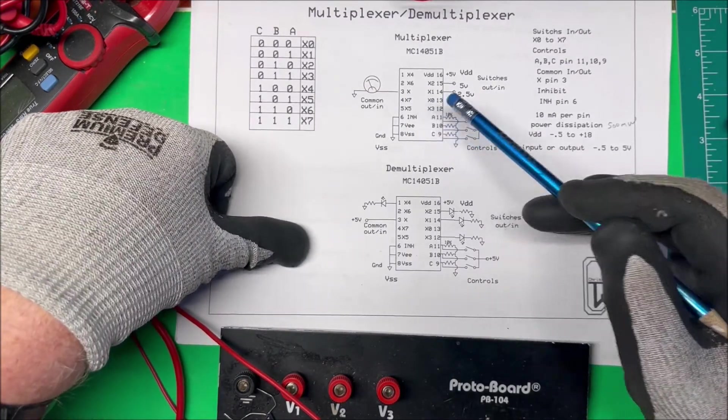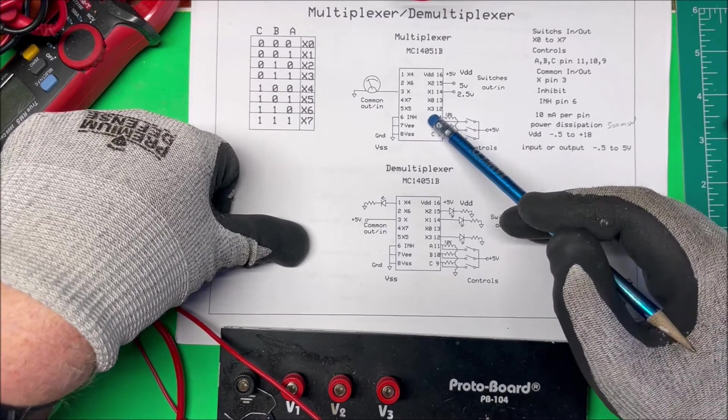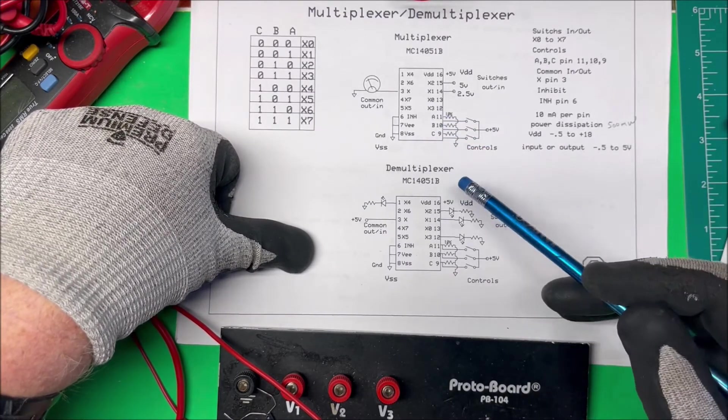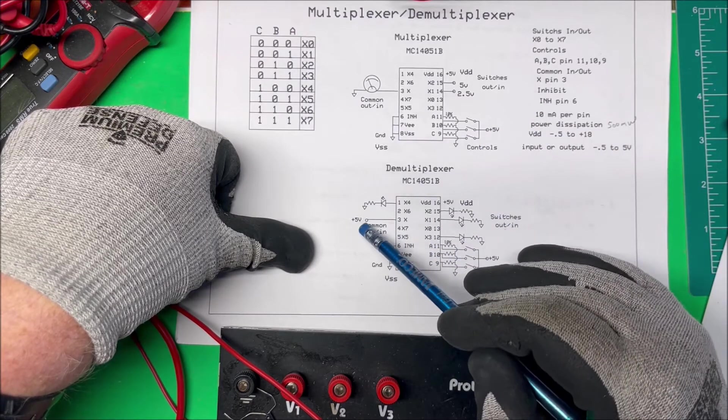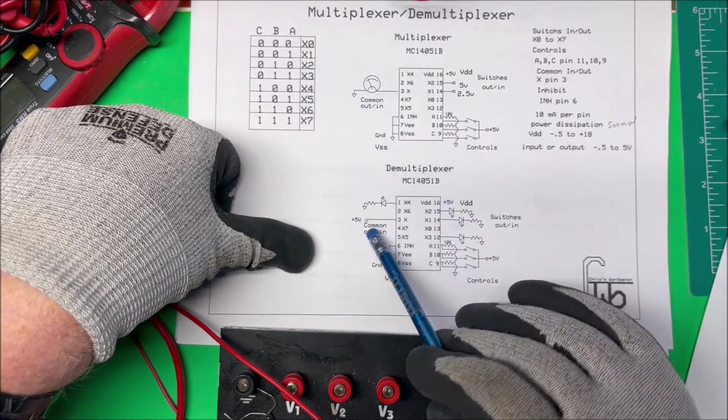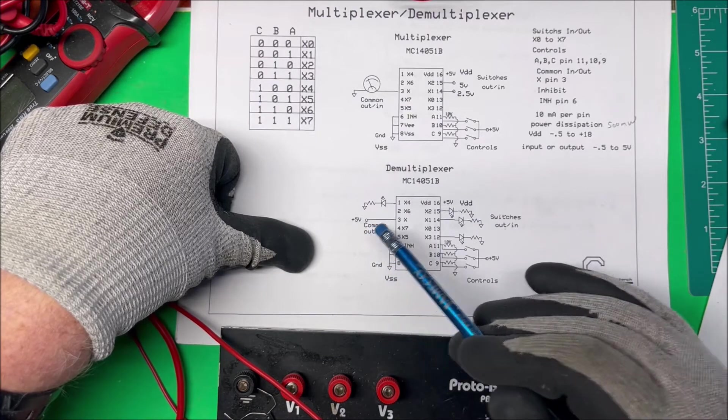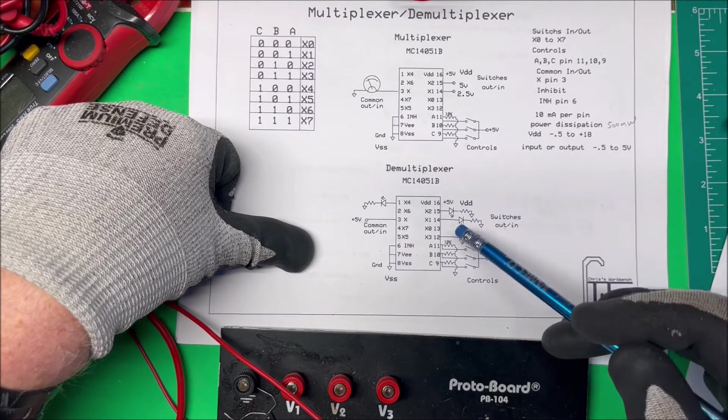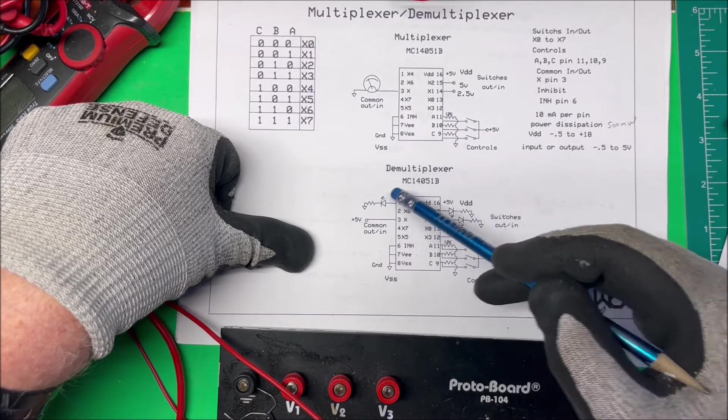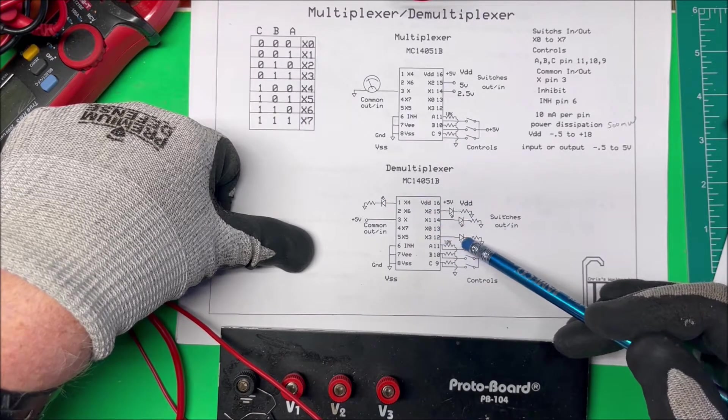I'm going to show you how I have it set up on a breadboard here. We'll see if it works right. So now a demultiplexer just works in the opposite direction. I'm going to put 5 volts in on this pin X, and as I switch through my control pins here from my binary numbers here, I'm going to light up these LEDs on the other side here.